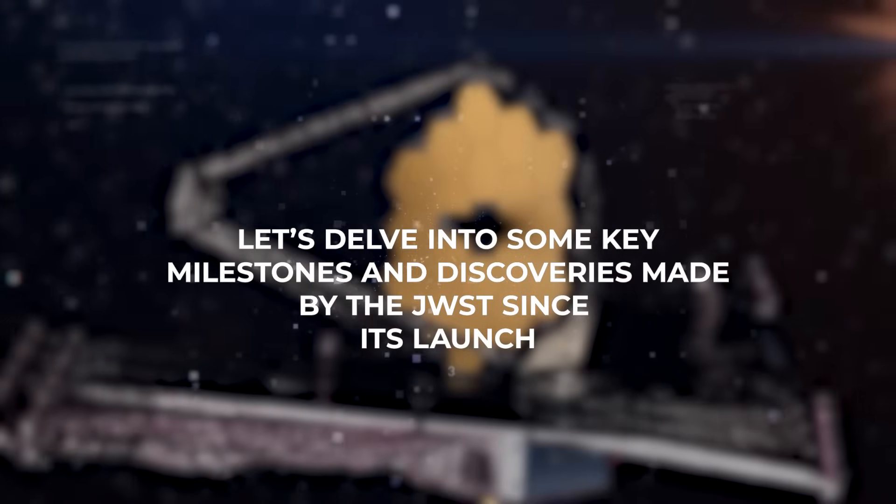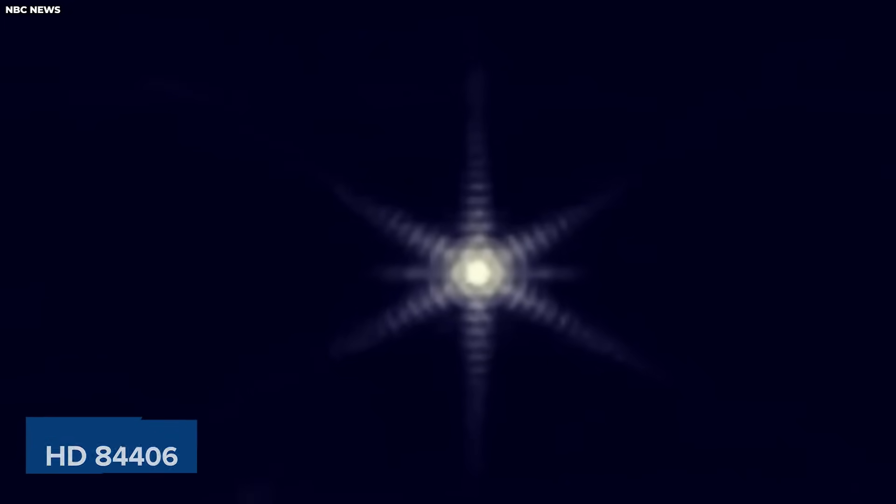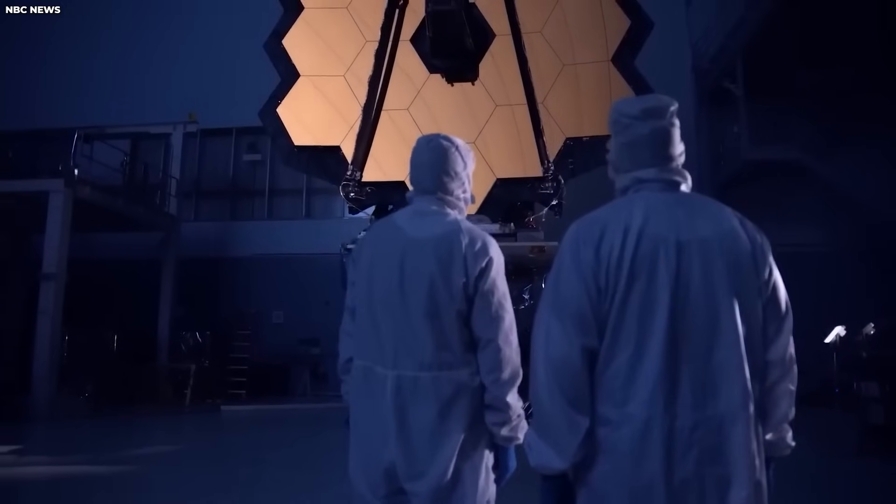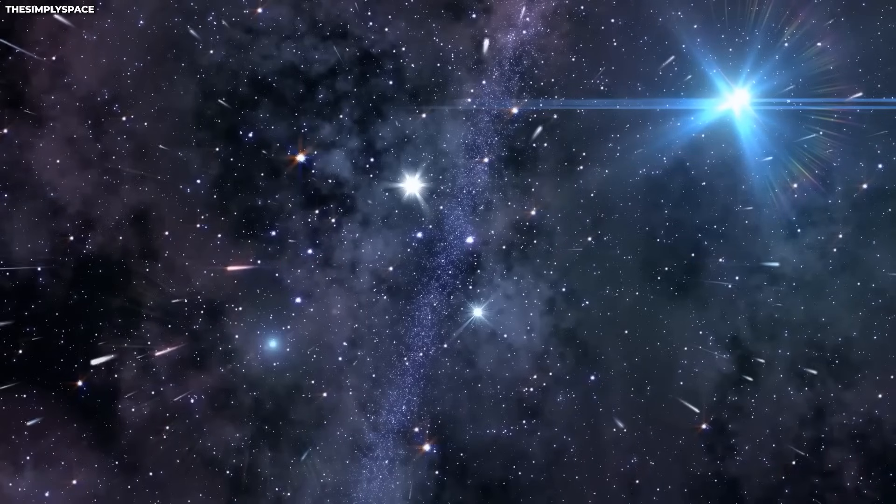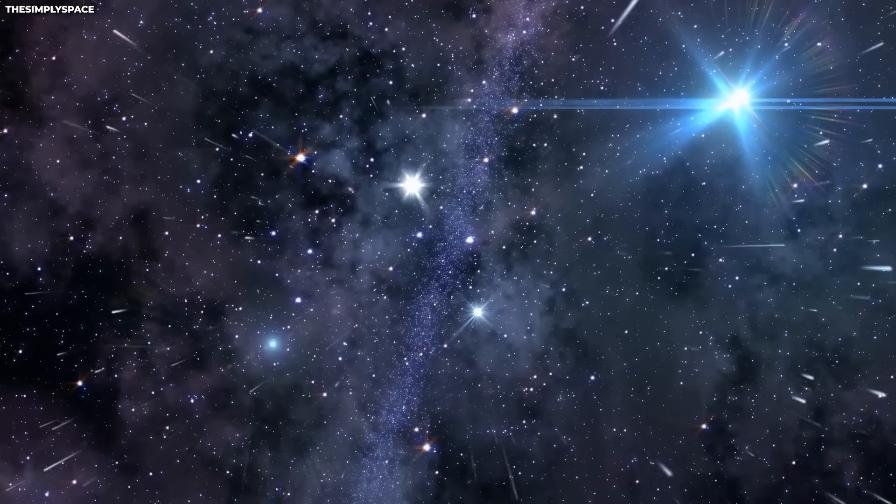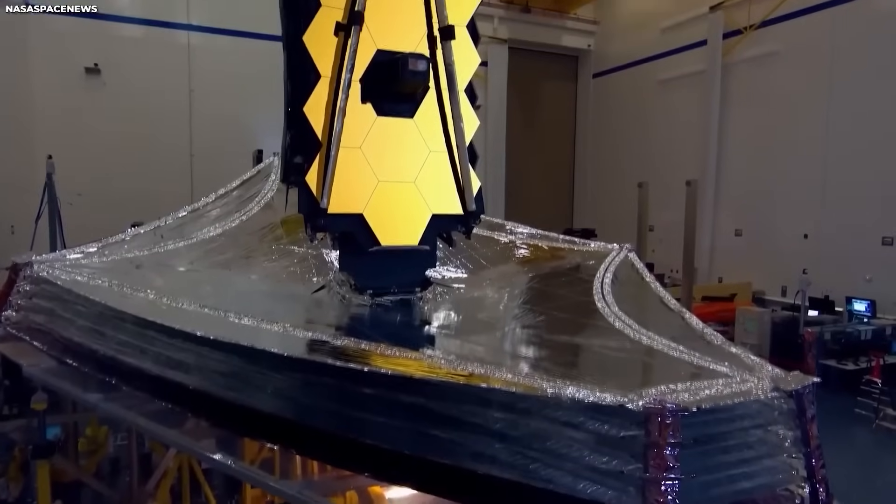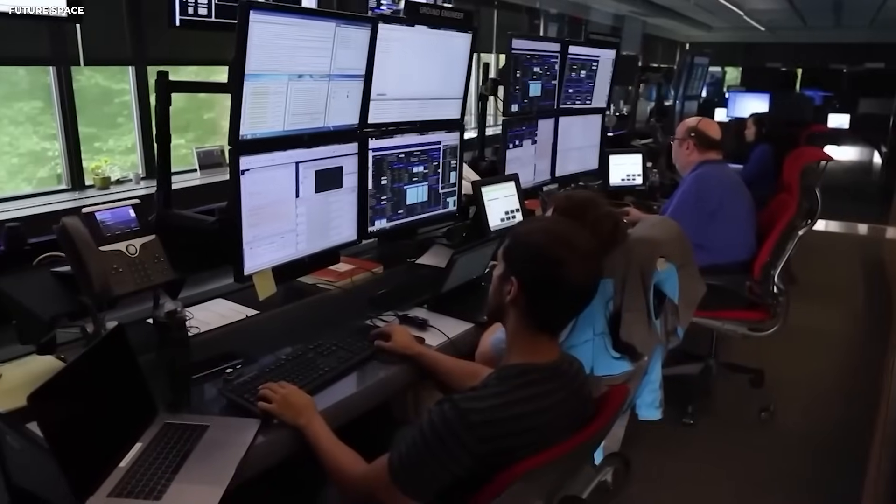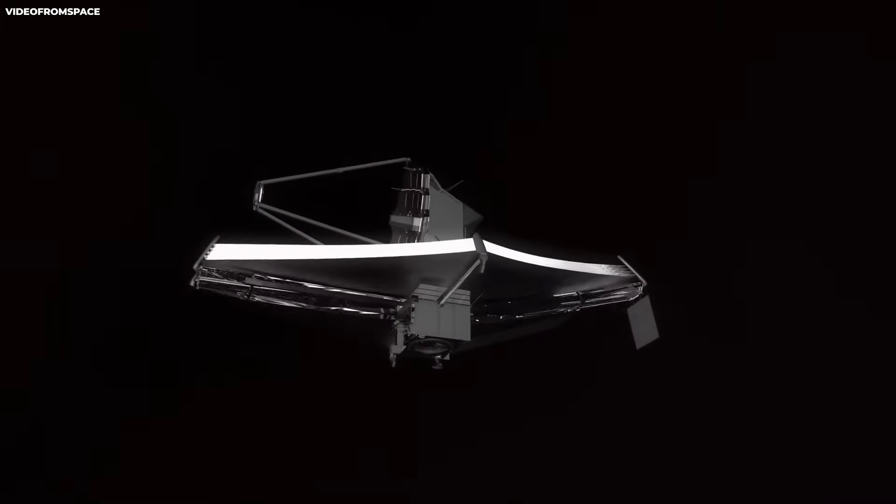Let's delve into some key milestones and discoveries made by the JWST since its launch. On February 18th, NASA unveiled an updated and enhanced image of HD 84406, showcasing the growing proficiency and precision of the JWST. By aligning each segment of the primary mirror, scientists were able to stack these images and produce a singular, sharp depiction of the star, providing a more detailed view and highlighting the telescope's remarkable precision and accuracy.